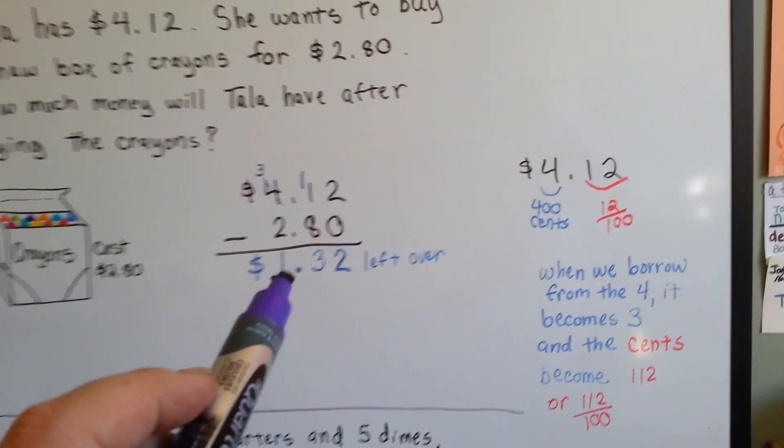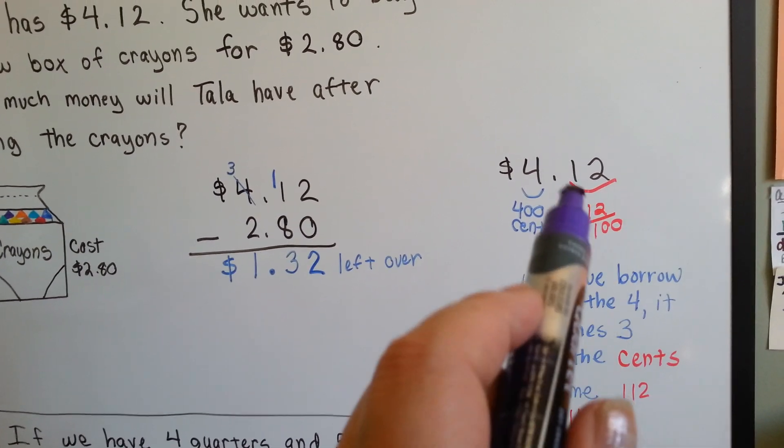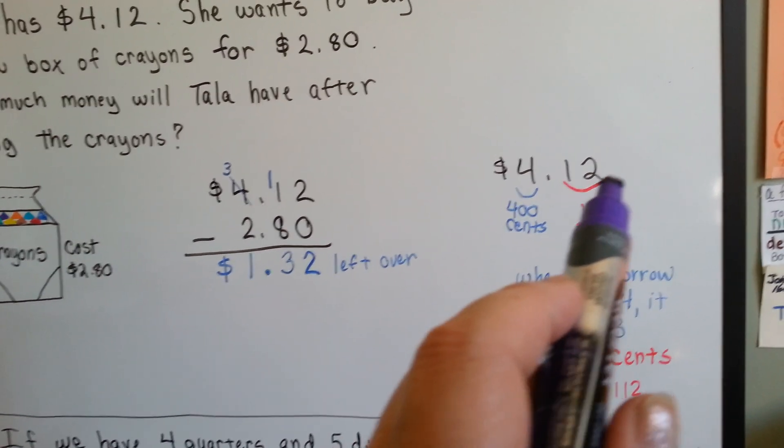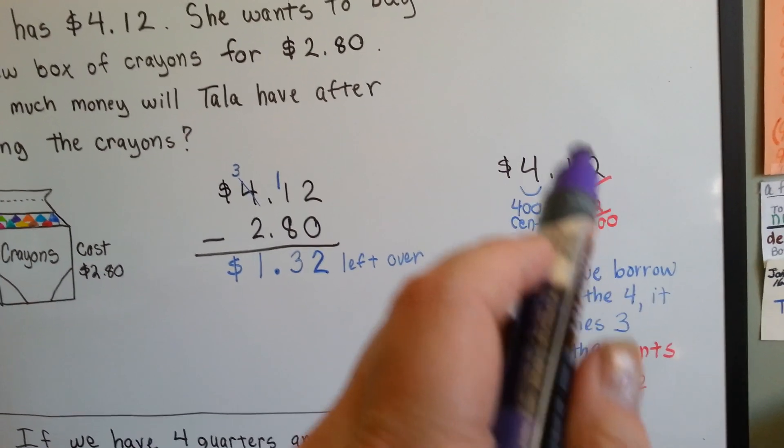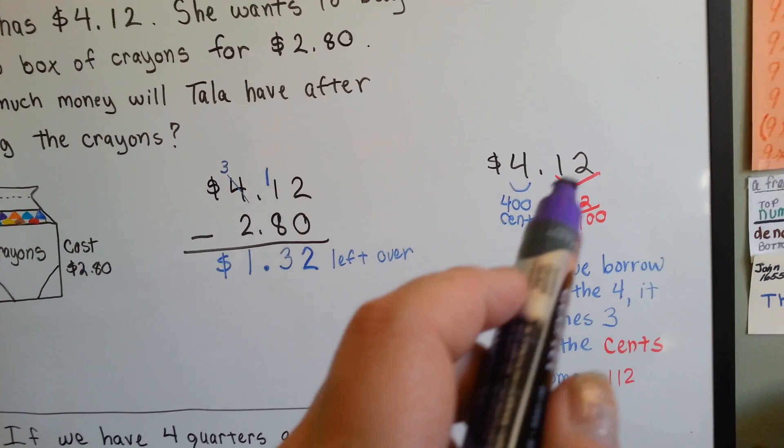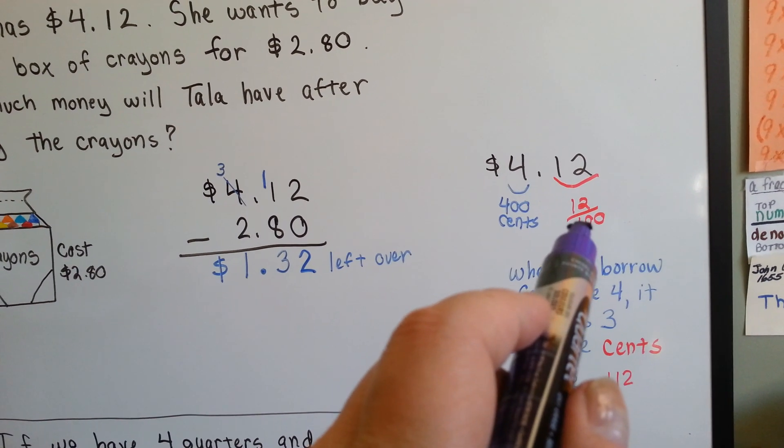Now, I want you to take a quick look at this. Remember on this side of the decimal point, it means parts of a dollar. Because when you get to ninety-nine and then one hundred, it becomes a dollar, and then she would have five dollars. So, this is parts of a dollar, it's twelve one-hundredths.